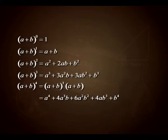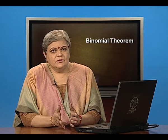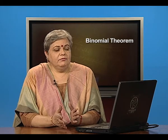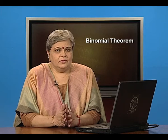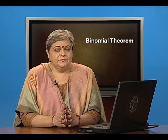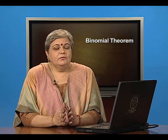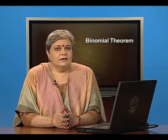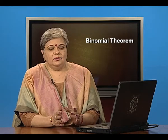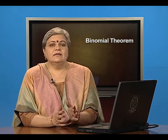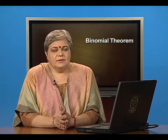We also observe that in each term the sum of the indices of a and b is the same and equals the index of (a+b). So if you look at (a+b)^4 and pick the third term, which is 6a²b², the total power — the sum of the powers of a and b — turns out to be 4. This pattern is being followed consistently, and it will be generalized into what we will term as the binomial theorem.